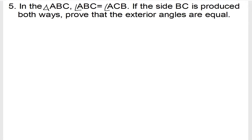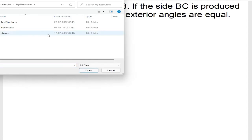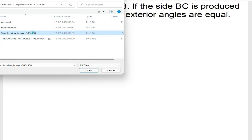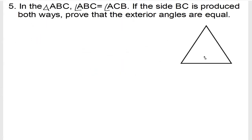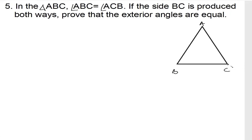First we need to take a triangle. Let me take a simple triangle. This is our triangle. The question says triangle ABC, so let me name this triangle as ABC. The side BC is produced both ways, so let me produce side BC both ways, like that.